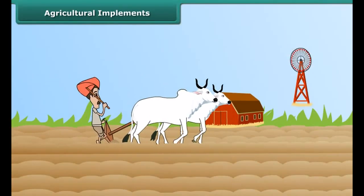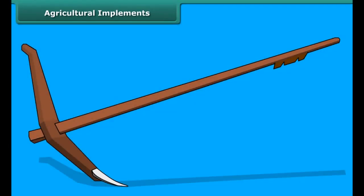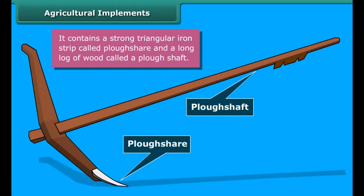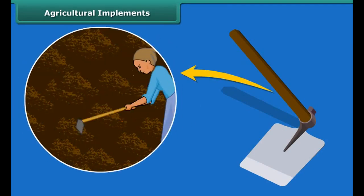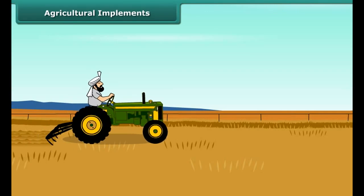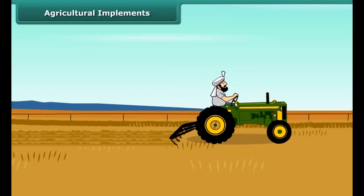Now look at this farmer — he is plowing the field with a plow made of wood. It contains a strong triangular iron strip called a plowshare, and the main part is a long log of wood called a plow shaft. Another tool used in plowing is a hoe, used for removing weeds and loosening the soil — it has a long rod of wood with a strong, broad, bent plate of iron that works like a blade. Nowadays, plowing is done by a tractor-driven cultivator, which saves both labor and time.